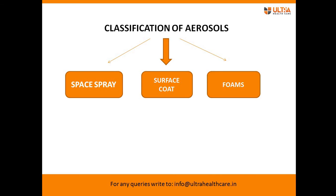Classification of aerosols — they are classified into three types. First is space spray, second is surface coat, and third is foams. Space spray is a liquid dispersed into the air in the form of tiny droplets with a size of 50 micrometers. Surface coat produces a wet coat after spraying with a particle size of 200 micrometers. Foam is a mass of bubbles formed in a liquid.